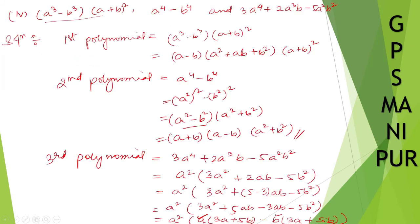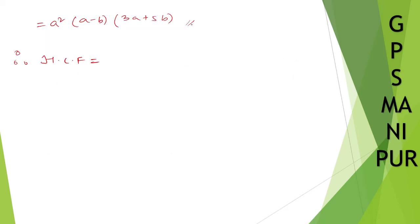Now, first polynomial, second polynomial, and third polynomial are all factored. Therefore HCF: from first and second, (a minus b) is common, (a plus b) is also common in first and second, but in third there is only (a minus b). So HCF equals (a minus b).